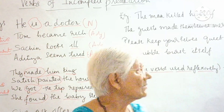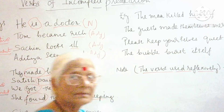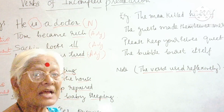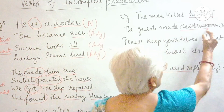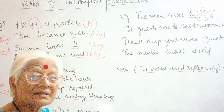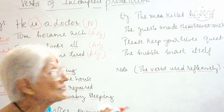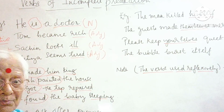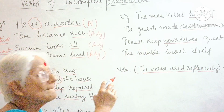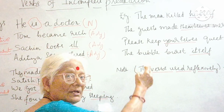'The man killed himself' — here 'himself' is a pronoun, specifically a reflexive pronoun. So some verbs use reflexive pronouns as complements. 'The guests made themselves merry' — 'themselves' is a reflexive pronoun. 'Please keep yourselves quiet' — 'yourself' is a reflexive pronoun, necessary as a complement to complete the incomplete verb 'keep.' 'The bubble burst itself' — 'itself' is a reflexive pronoun referring to the bubble.